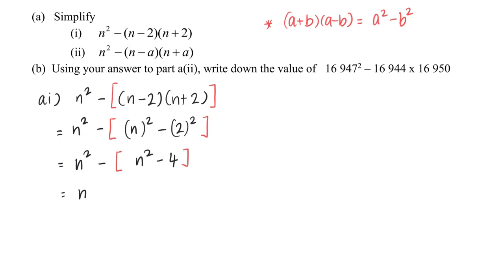So continuing to simplify, you will get -n² + 4. This is important - negative times negative will give me positive 4. And the final answer is positive 4, because n² minus n² equals zero.